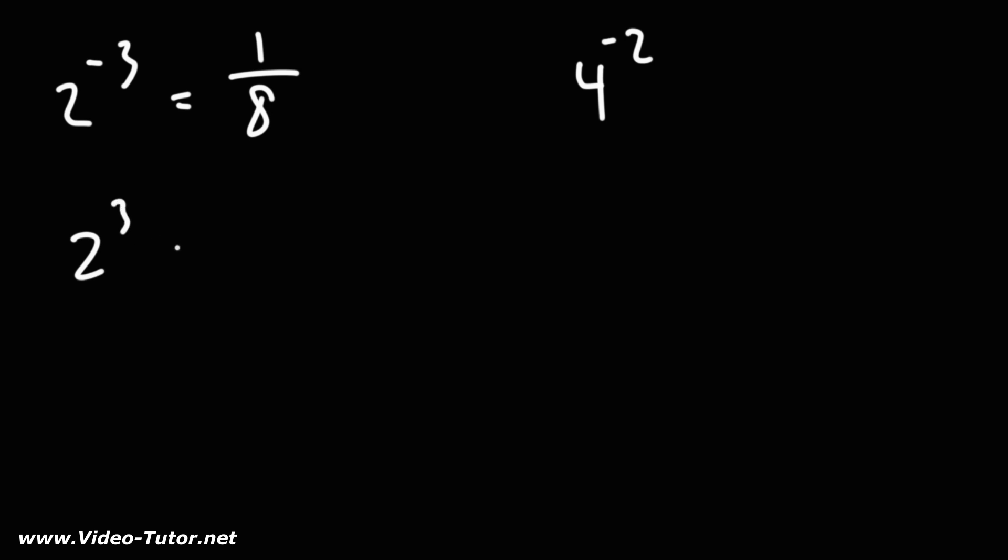In contrast, 2 to the third is 8. So when you have a negative exponent, you just basically flip it over 1. Or in this case, flip it under 1.